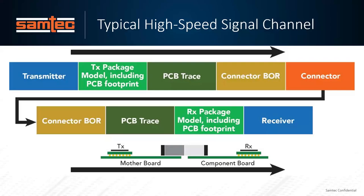How does the signal travel the PCB trace? How many layers does it go through? Are there vias? It gets to a connector — the breakout region. BOR is a Samtec term for breakout region; other terms include signal launch. How does that signal get into or out of the connector, and how does it pass through the connector? Same thing on the backside: breakout region, PCB trace, package, substrate, die, and then the receiver itself. There are any number of subcomponents across the whole channel that affect the entire signal integrity of the challenge you're working on.